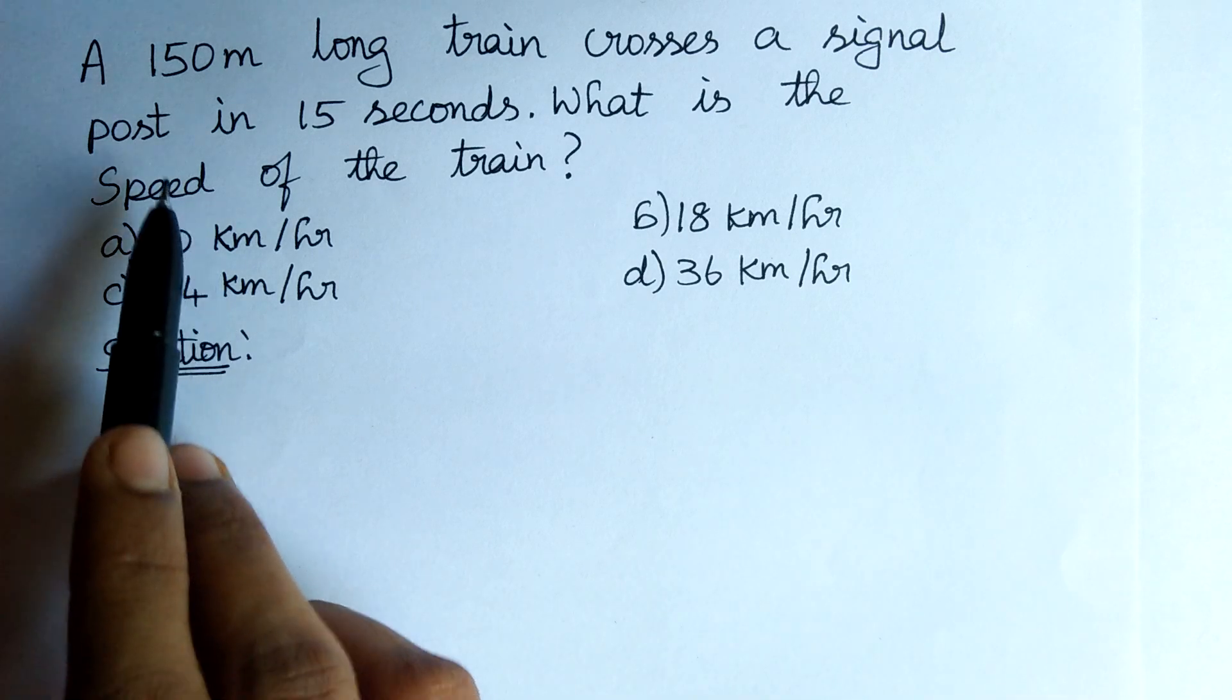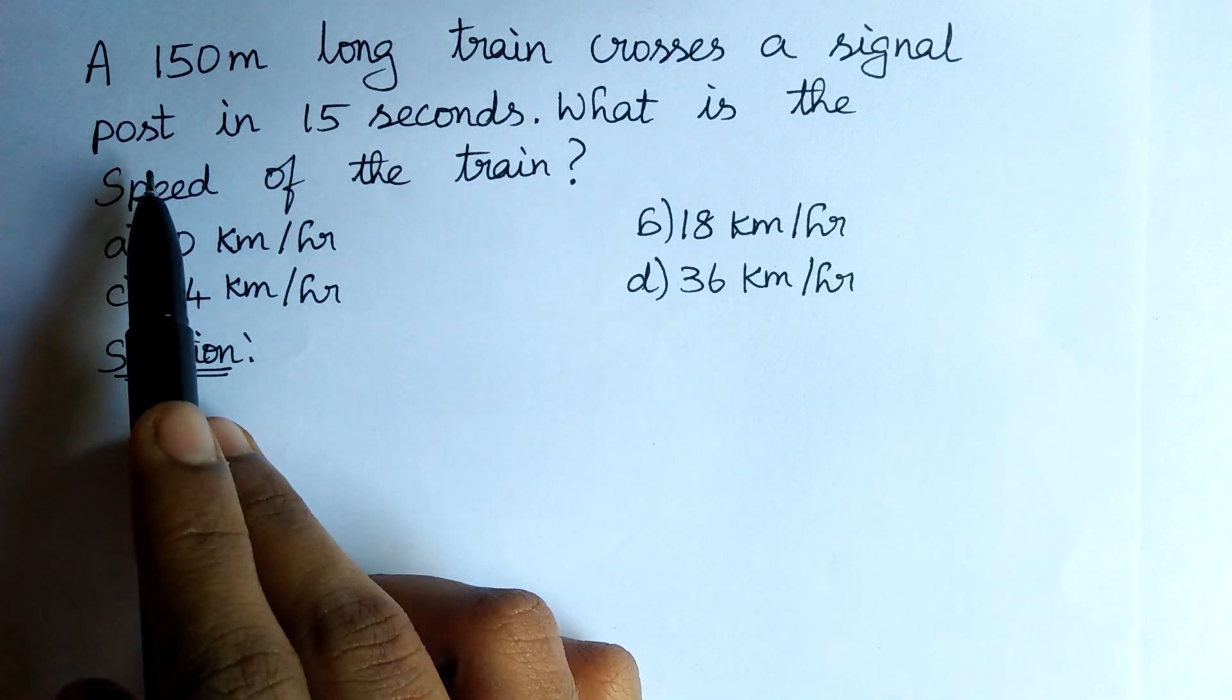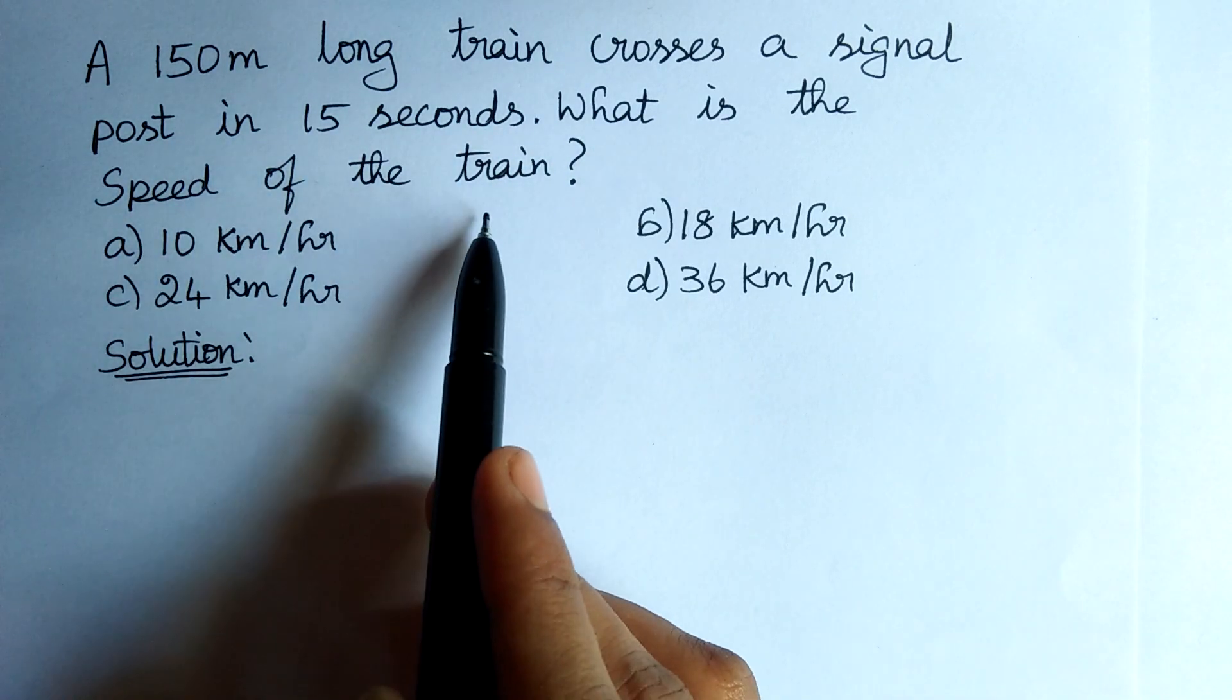The question is, a 150 meter long train crosses a signal post in 15 seconds. What is the speed of the train?